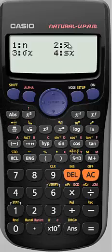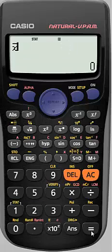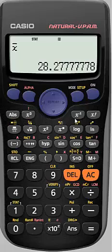So we're going to find the mean. So we press 2 and then we press equals. So the mean of the scores that we put in was 28.3 rounded to one decimal place.